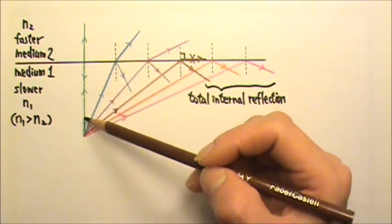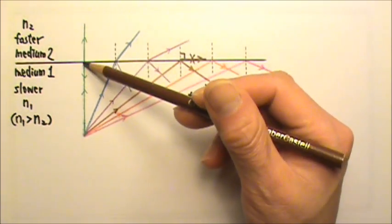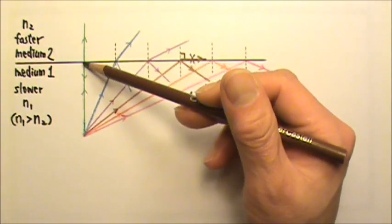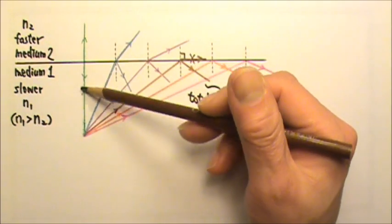Well, except for normal incidence. At normal incidence, the refracted part of the ray goes straight through and the reflected part reflects straight back.